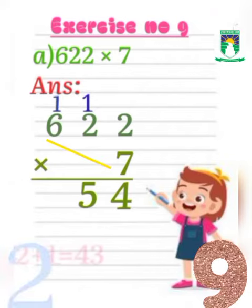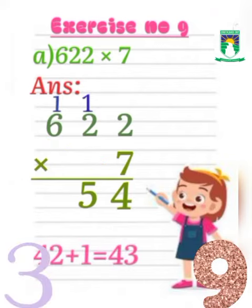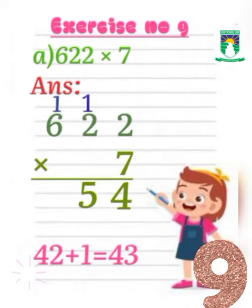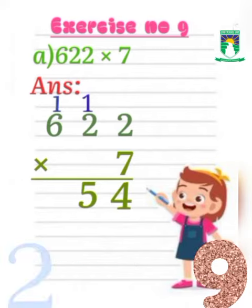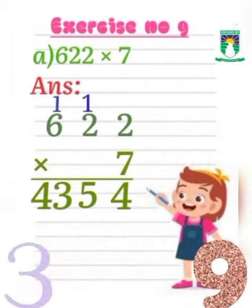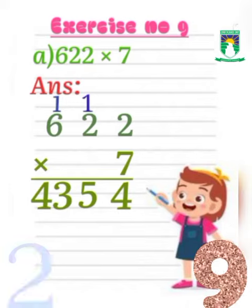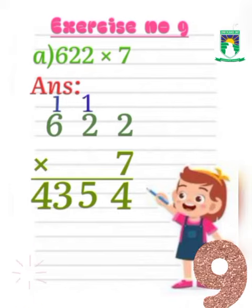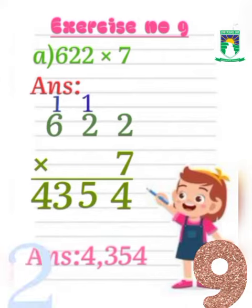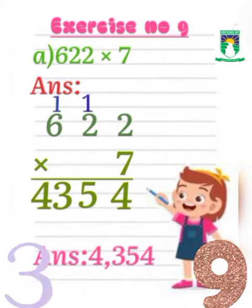Now 7 times 6 equals 42, and add 1 of carry to 42, it will become 43. Write 43 under the 6 column. We will not take 4 as carry because there is no more value in the top row. So the answer is 4,354.